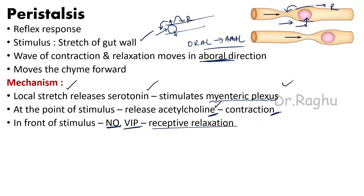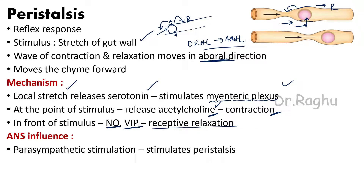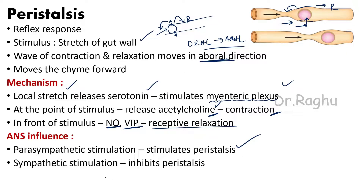Peristalsis occurs as a local reflex response but can be modulated by the autonomic nervous system. Parasympathetic stimulation stimulates peristalsis, while sympathetic stimulation inhibits it. Remember that peristalsis occurs from the level of the esophagus to the level of the rectum.